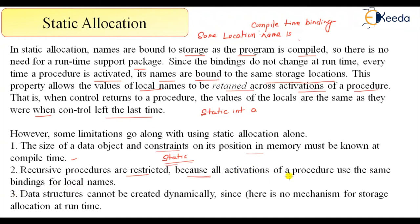All activations of the procedure use the same binding for local names. Data structures cannot be created dynamically since there is no runtime mechanism. So the limitations of static allocation are: position and size must be known at compile time, recursive procedures are restricted, and dynamic data structures are not possible.